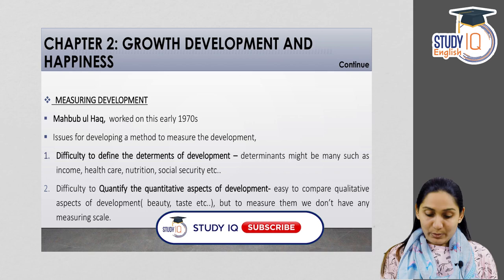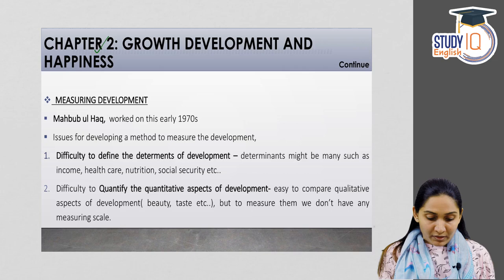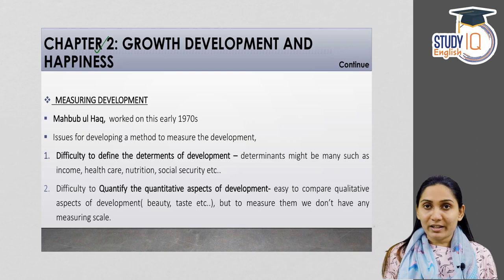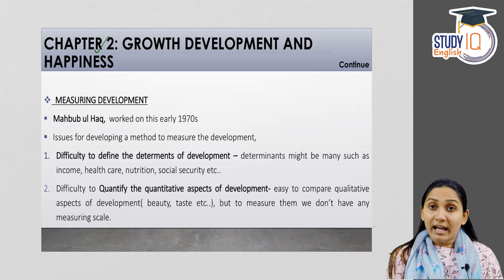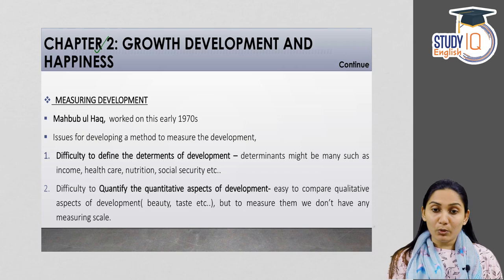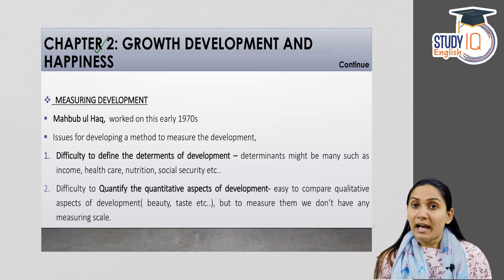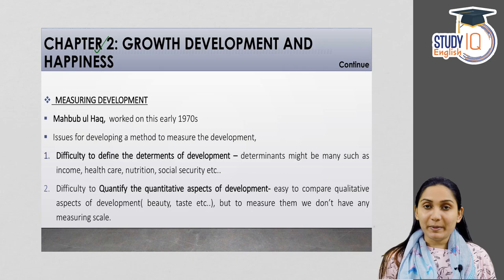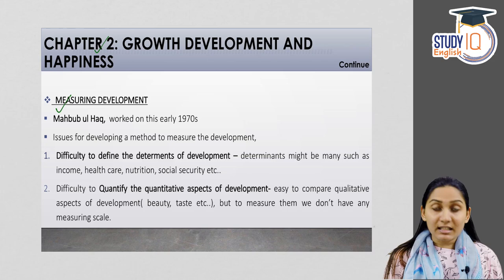Hello friends and welcome to Study IQ English. I'm Joyce Joy and today we are going to continue the second chapter of Indian Economy by Ramesh Singh. In the second chapter it is 'Growth, Development and Happiness'. The first part is already done; this is the second part. Today we will be discussing about the measurement of development, the Human Development Index, the continuing debate, wider interpretations of development, and the Gross Happiness Report.